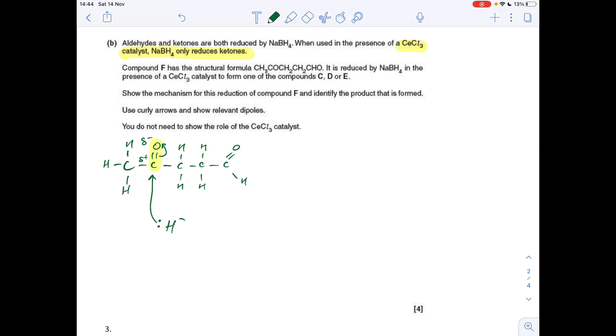That's going to give us this intermediate. Then if we bring a water molecule into play, put its dipoles on, we need to take a curly arrow from the lone pair on the O minus to the delta positive hydrogen on the water, and then we just need to break that bond there.